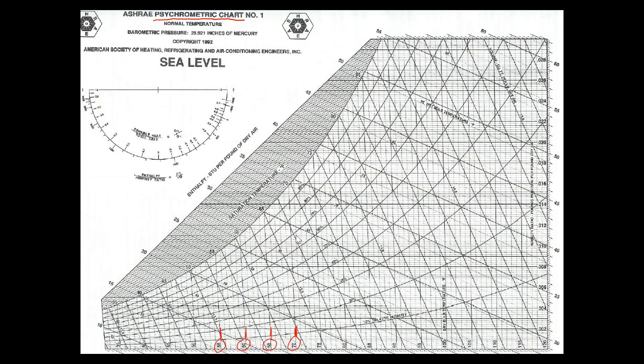First of all, from an energy perspective, we're primarily interested in just three axes of this incredibly complicated chart. And we'll start down here at the bottom. You see these circles here that I've circled in red? Along the x-axis of this chart are the dry bulb temperatures.